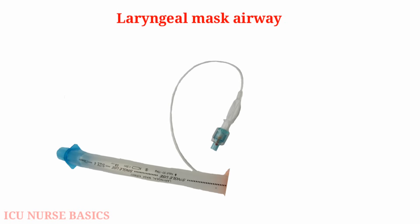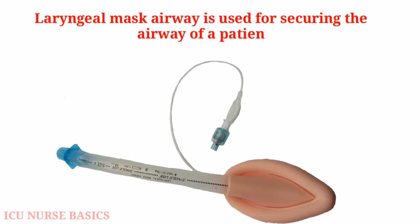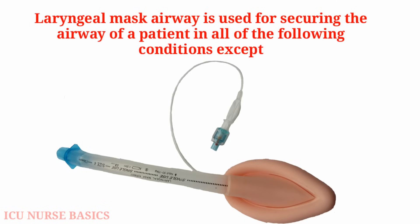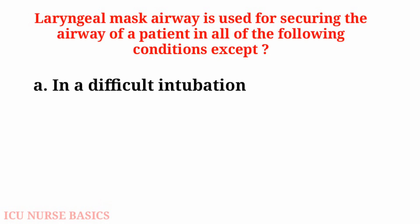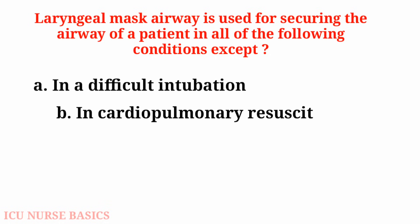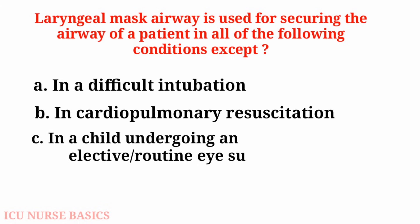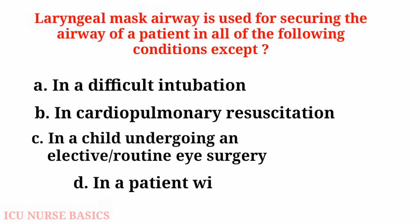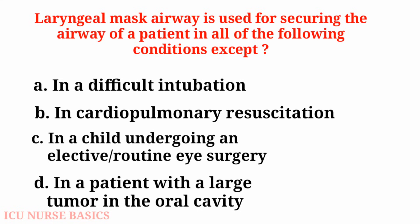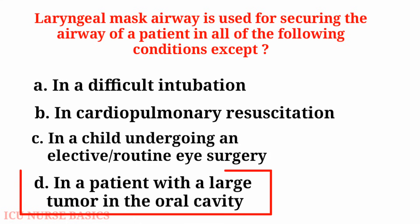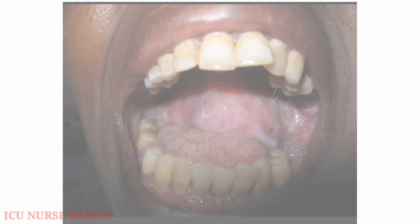Laryngeal mask airway is used for securing the airway of a patient in all of the following conditions except: A. In a difficult intubation, B. In cardiopulmonary resuscitation, C. In a child undergoing an elective or routine eye surgery, D. In a patient with a large tumor in the oral cavity. The answer is D. In a patient with a large tumor in the oral cavity, it is not possible to use a laryngeal mask airway.